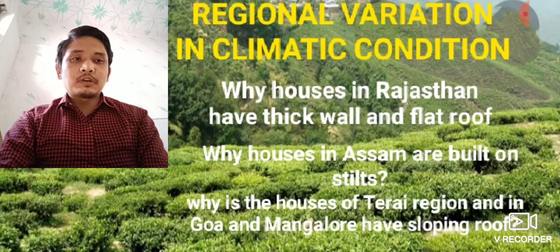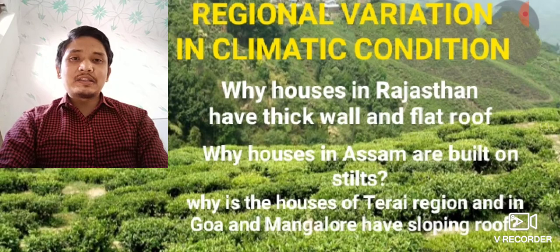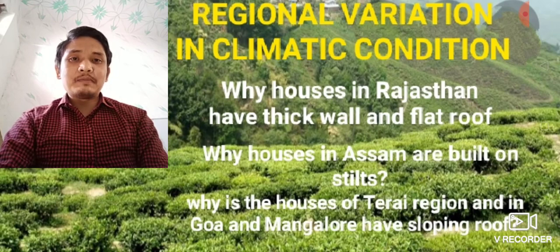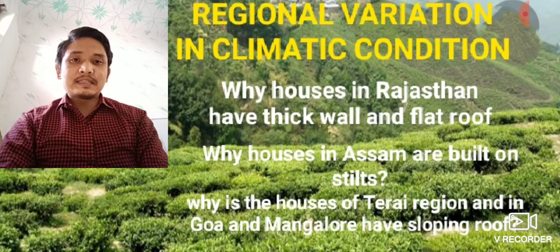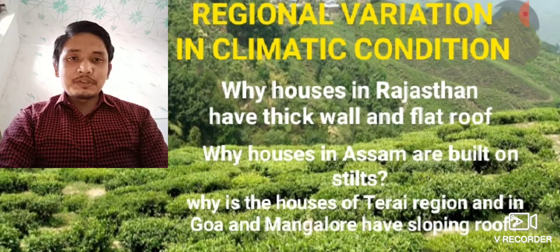Another question: why do houses in the Tarai region, Goa, and Mangalore have sloping roofs? These places receive heavy rainfall during the monsoon season, so the sloping roof allows rainwater to easily slide down to the ground. That is why they have sloping roofs.